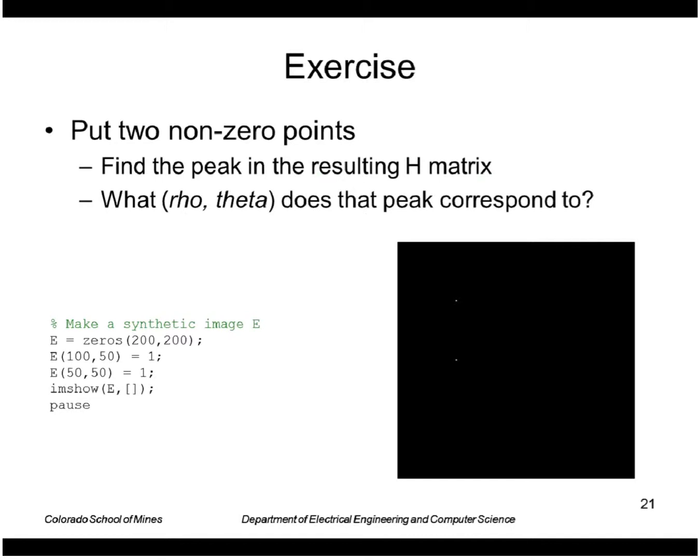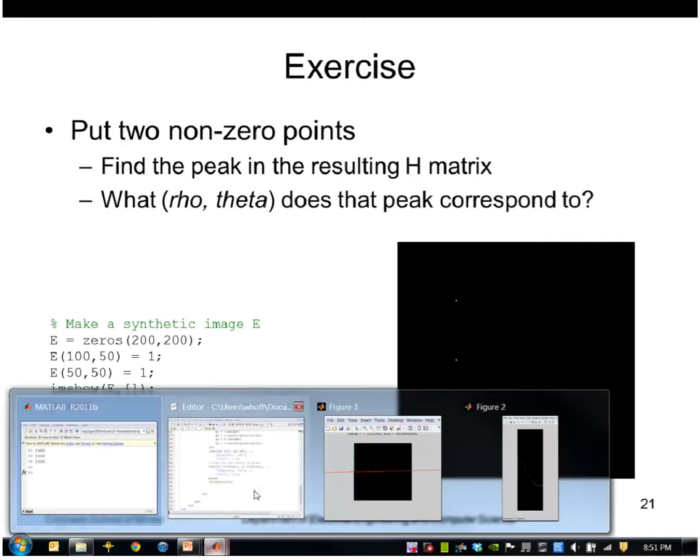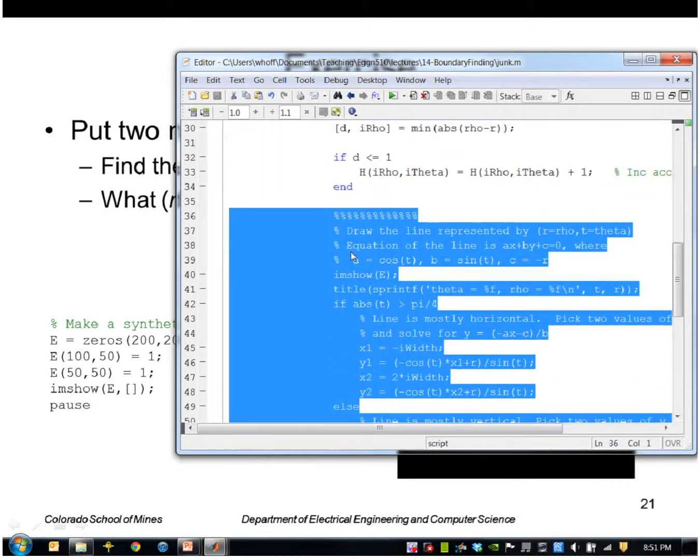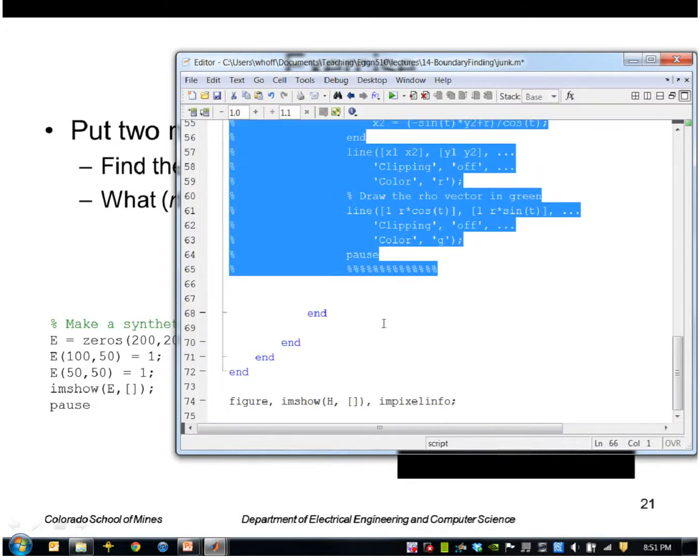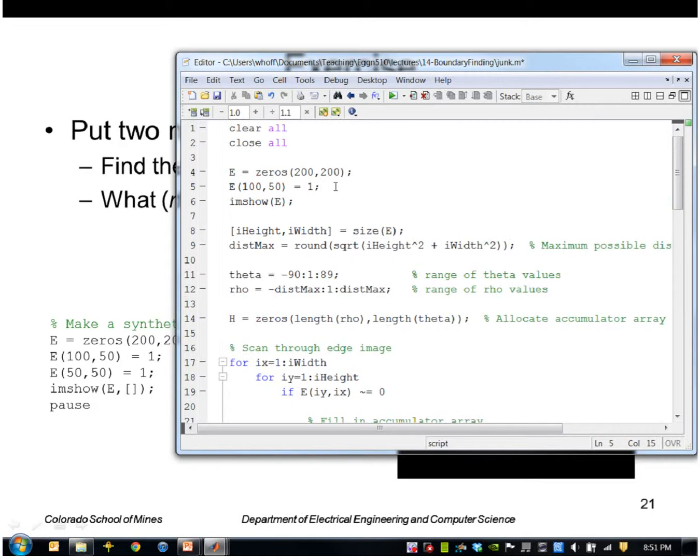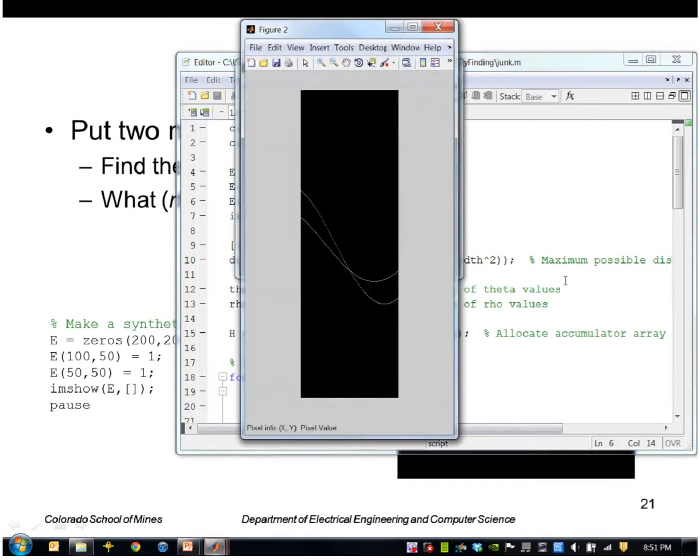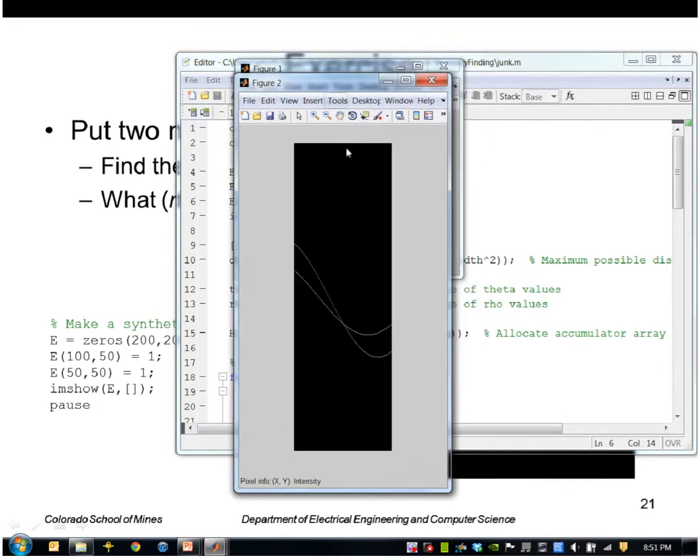Let's try putting two points in the parameter space and seeing what that looks like. I'll just comment out these lines here. I don't want to see all the lines again. But I'll say, I want to put one at 50,50 in addition to 150. And I'll go ahead and run that. So now I have, if you can see, two curves that intersect.